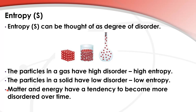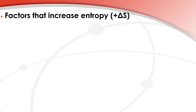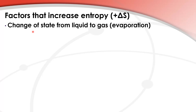Matter and energy have a tendency to become more disordered over time. Next we look at some factors that increase entropy — positive delta S. A change of state from a liquid to gas is evaporation. Here we have liquid bromine, and if you heat it it becomes a gas. The gas particles are more disordered, therefore we have an increase in entropy.